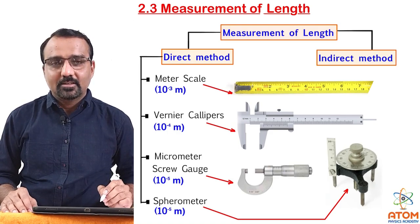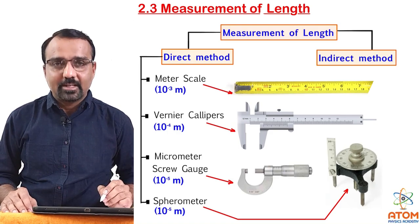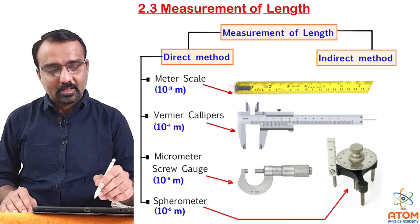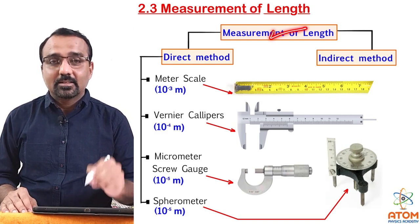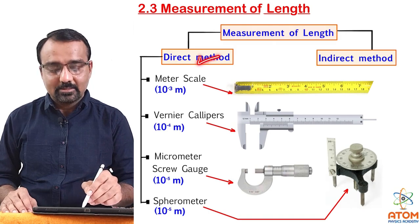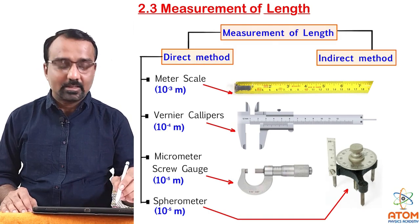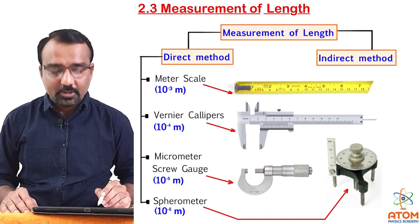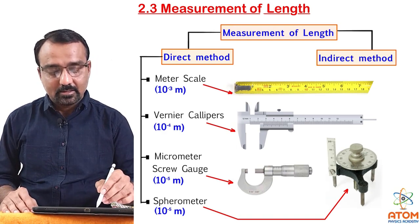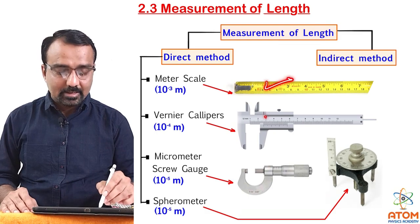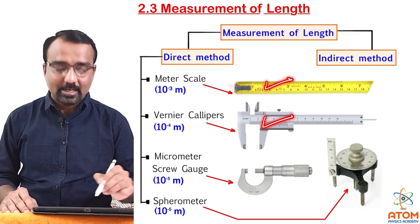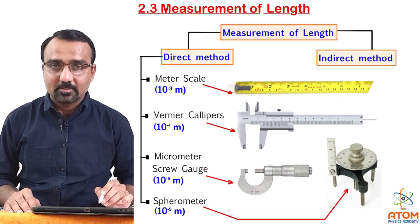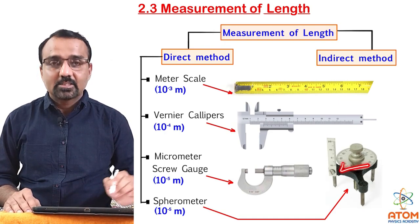Let us see topic 2.3, Measurement of Length in Chapter 2, Units and Measurement. Measurement of length can be done by two methods: direct method and indirect method. In the direct method, we use different types of instruments like meter scale, vernier calipers, micrometer screw gauge (sometimes just known as micrometer), and spherometer.